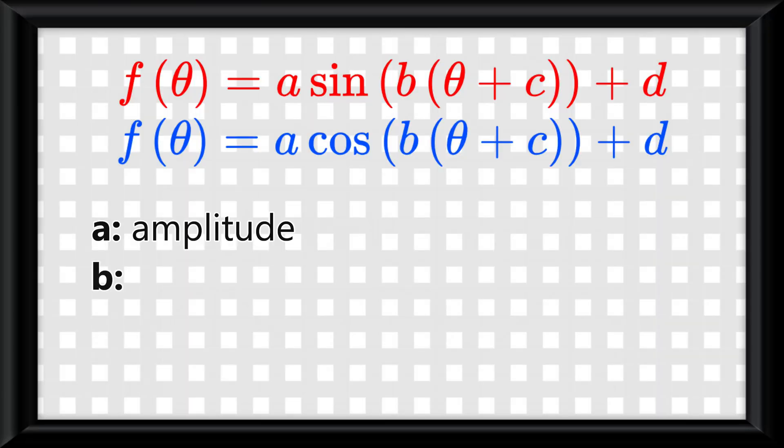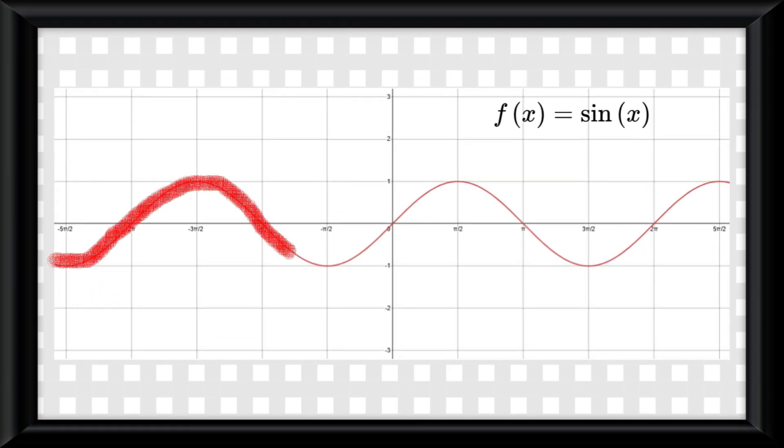B is a little strange. B is equal to 2π over the period. And remember, whatever the period is will show how long it takes for the graph to complete one cycle of its pattern.